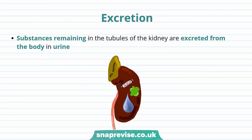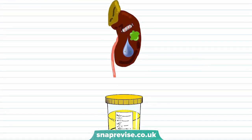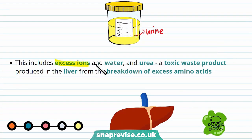The substances remaining in the tubules of the kidney are excreted from the body in urine because they're unwanted. This includes some ions, urea, and water — these excess ions, water, and urea are excreted out of your body as urine.